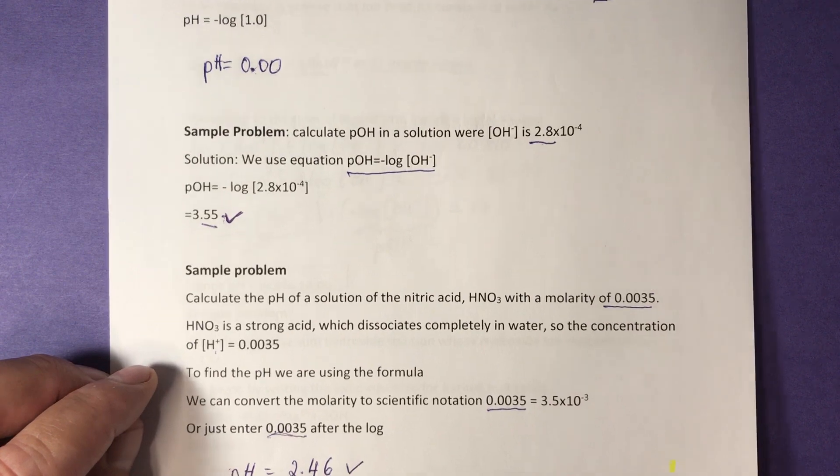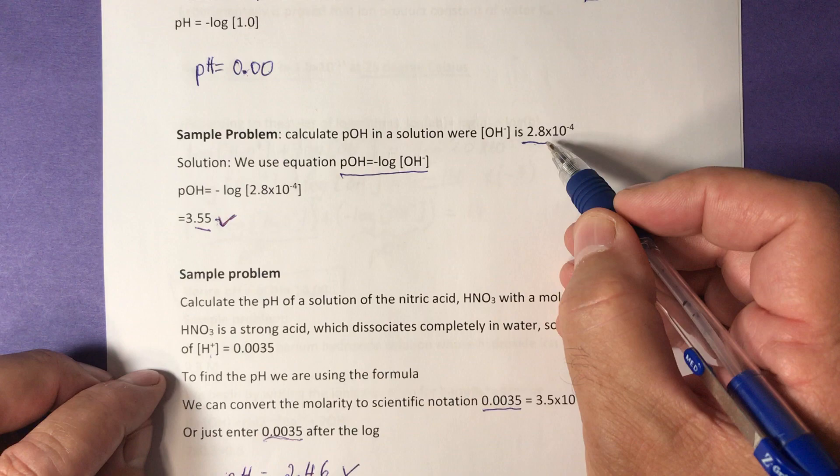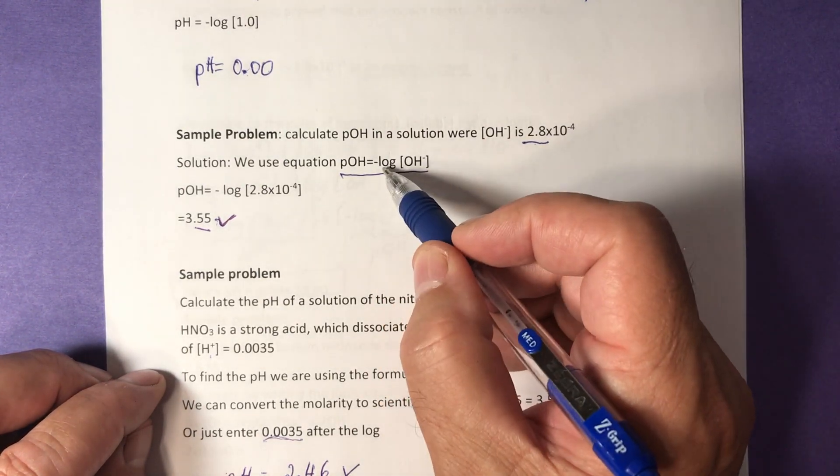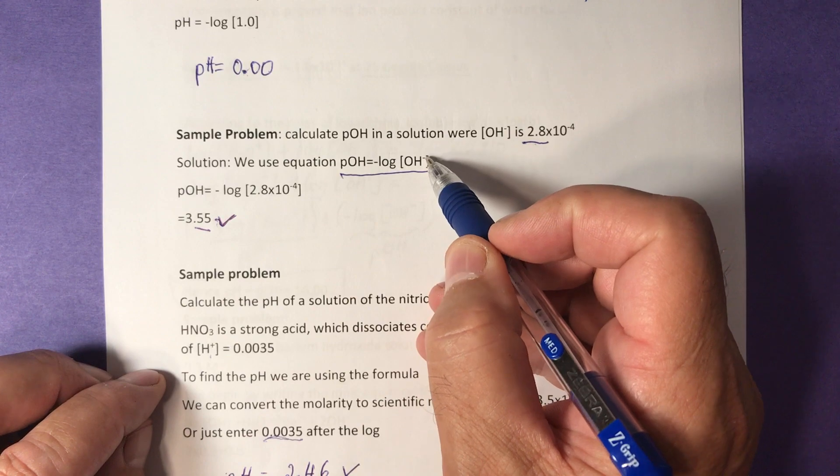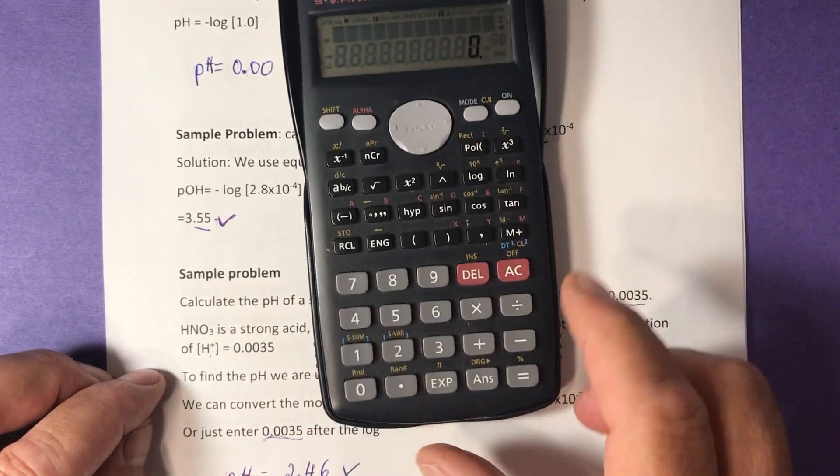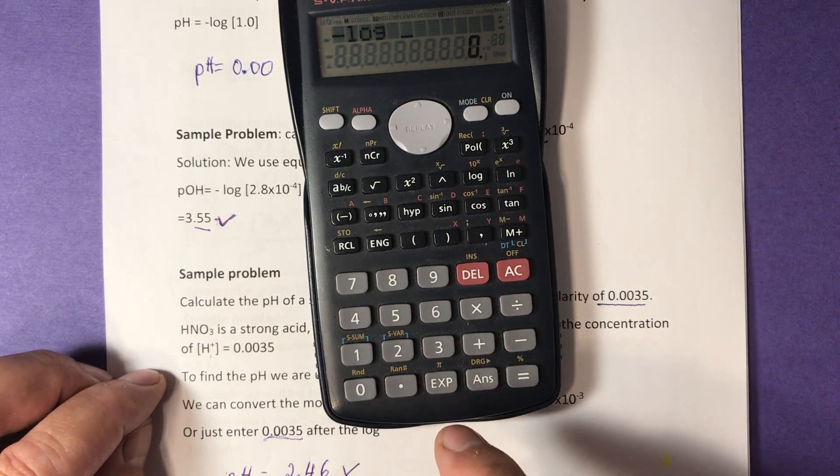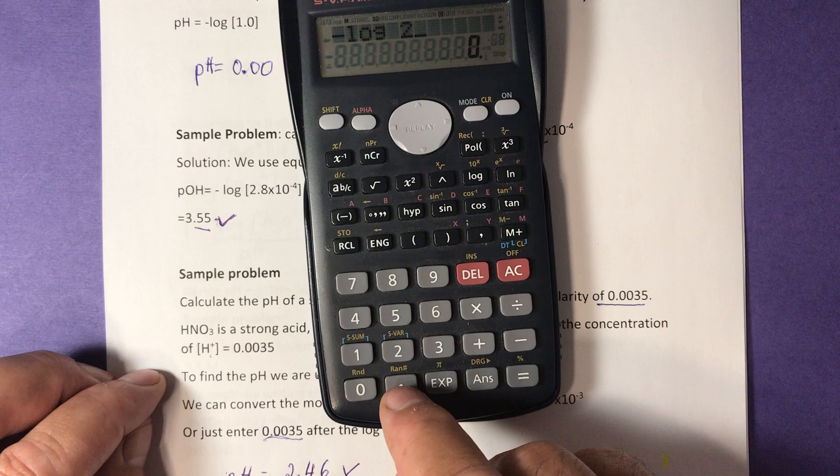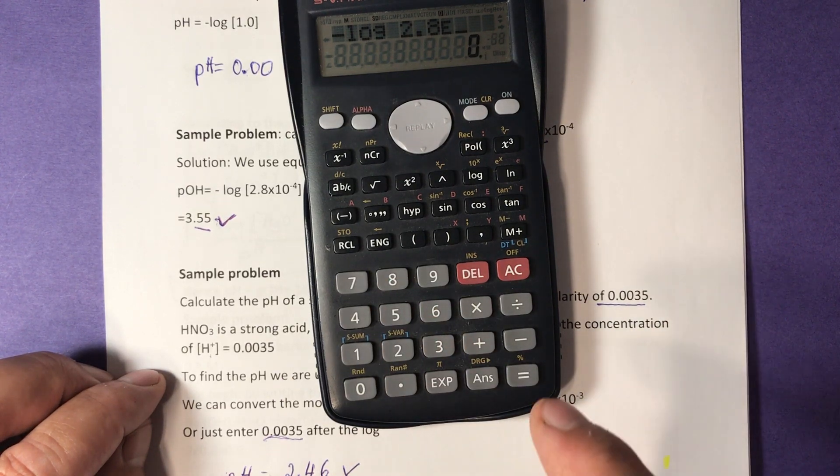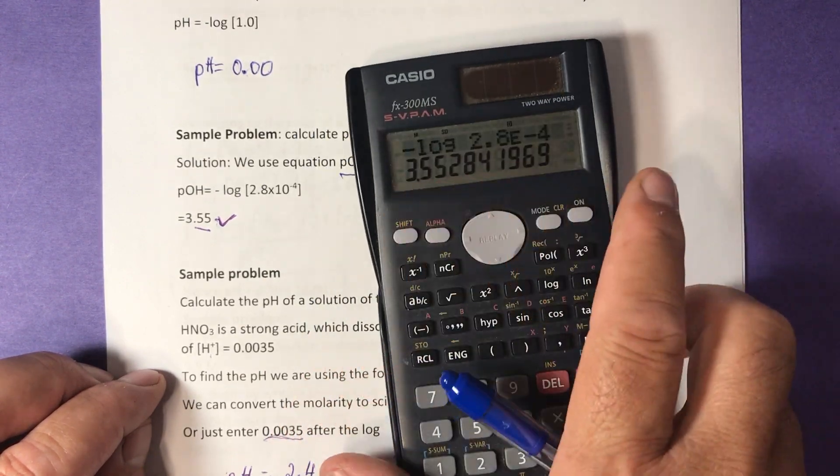Another sample problem. Calculate the pOH in a solution where OH minus concentration is 2.8 times 10 to negative 14. We use the formula negative log of OH minus. So we press negative, then log, then 2.8, EXP or EE in your calculator, negative 4, and you get the answer 3.55.